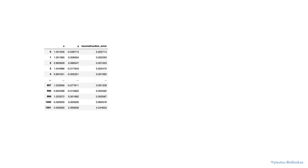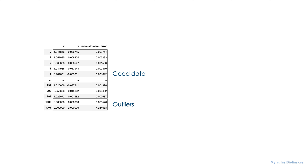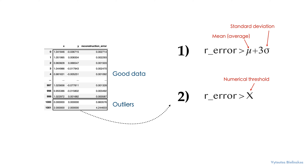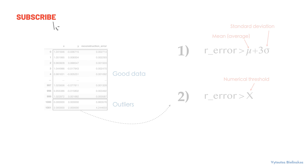There are a couple of approaches to automate outlier extraction from your dataset. The first approach: flag as outliers those data points with a reconstruction error higher than the mean plus three times the standard deviation of all reconstruction errors. The second approach: define your own custom numerical threshold — everything above that threshold is flagged as an outlier. You are the boss here; that's your choice. Subscribe to the channel to get more useful videos in the future. See you there.